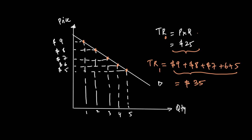First degree price discrimination is fairly rare in the real world because it is very hard to find out what consumers are willing to pay — they will not tell you. However, if a producer is successful, this is the most profitable form of price discrimination because the entire consumer surplus, the area under the demand curve above the market price, is now converted to producer surplus.